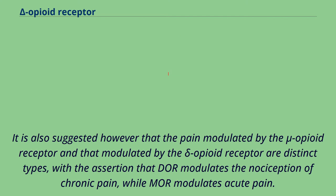It is also suggested that the pain modulated by the Mu Opioid Receptor and that modulated by the Delta Opioid Receptor are distinct types, with the assertion that DOR modulates the nociception of chronic pain, while MOR modulates acute pain.